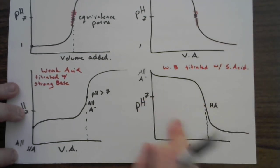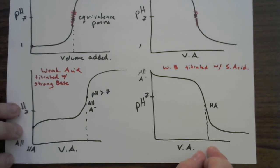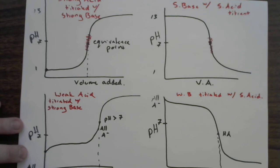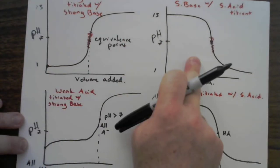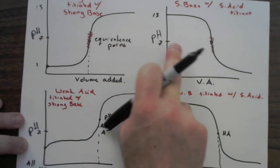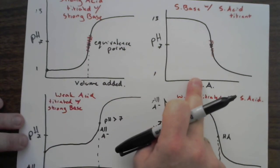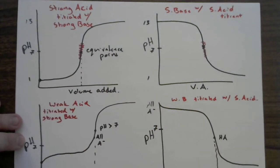So these are your curves. You should notice a few things about this: these are highly symmetrical and they really will cross through seven every single time because of the nature of a strong acid and a strong base.